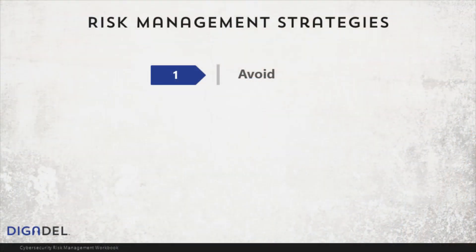Hello and welcome to my series on cybersecurity risk management. In this episode we're going to look at the four fundamental strategies that can be used to address risk. The first strategy is avoid. Avoid means discontinuing the activity that would make you incur the risk. This is the simplest strategy but potentially the most costly, since you completely eliminate any benefit of the activity.